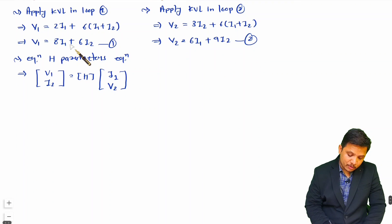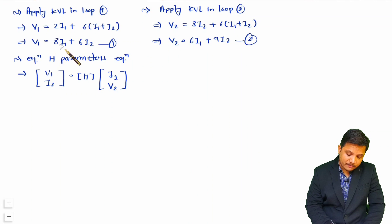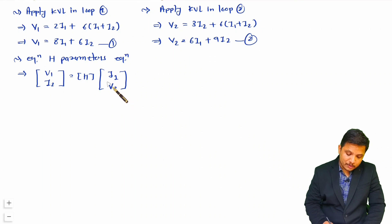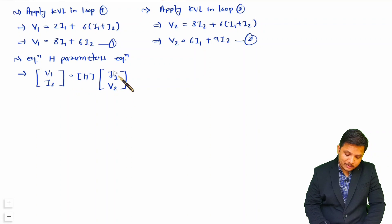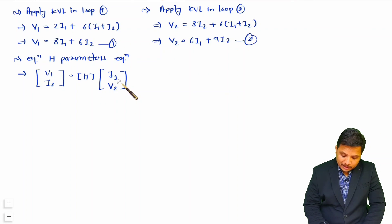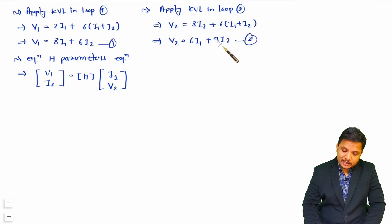Looking at our two equations: equation 1 gives V1 in terms of i1 and i2 — not yet in the required h-parameter form (V1 based on i1 and V2). Equation 2 gives V2 in terms of i1 and i2. However, we can rearrange equation 2 to express i2 based on i1 and V2, which is exactly what the second h-parameter equation requires.